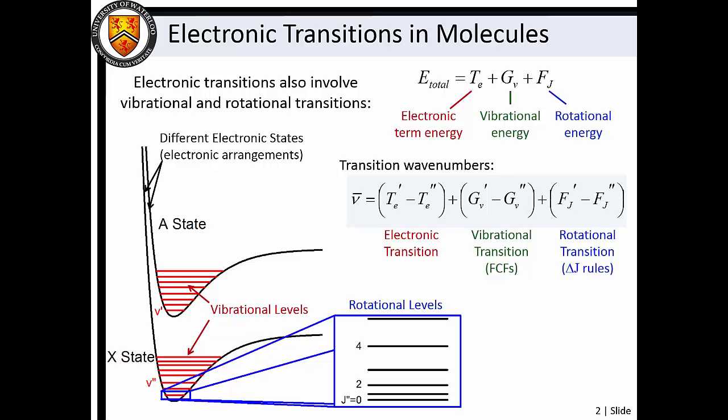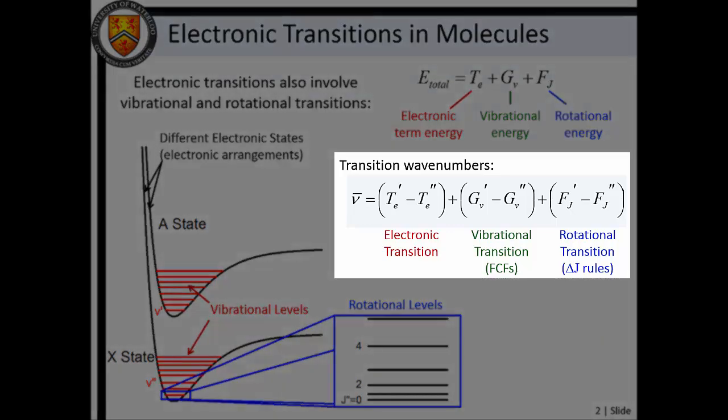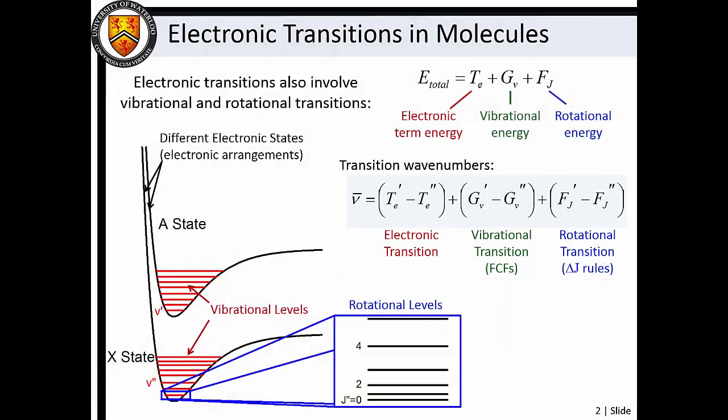Thus, electronic transition wave numbers can be calculated by summing the differences in electronic, vibrational, and rotational energies between the ground and excited electronic states.